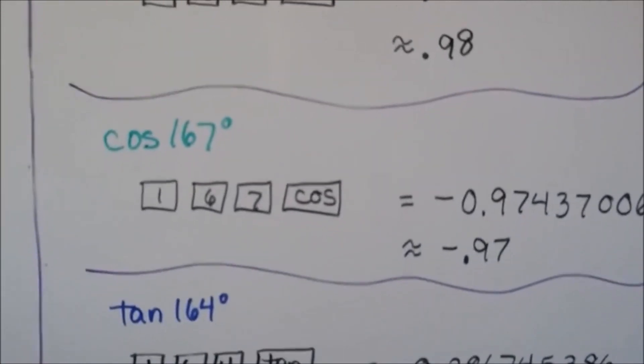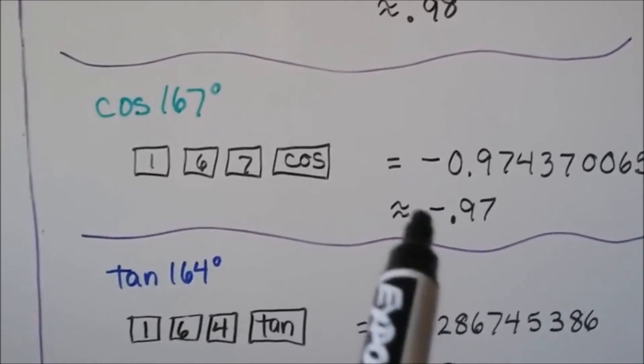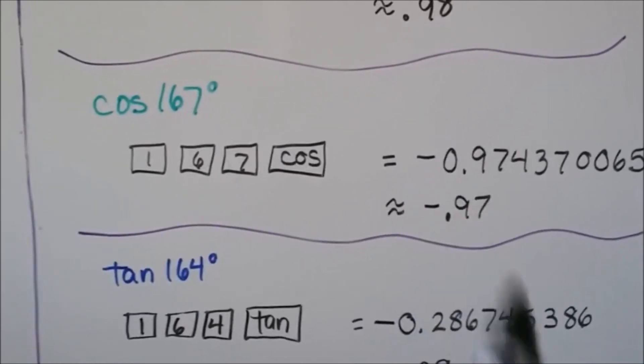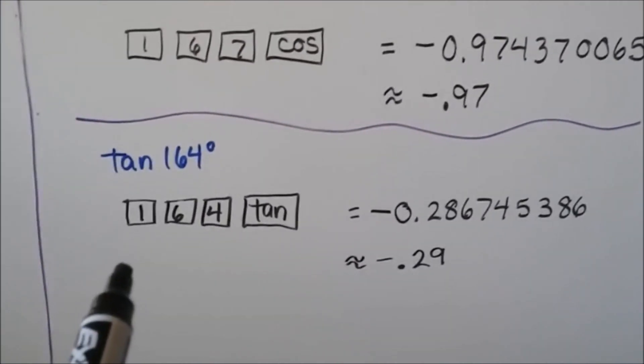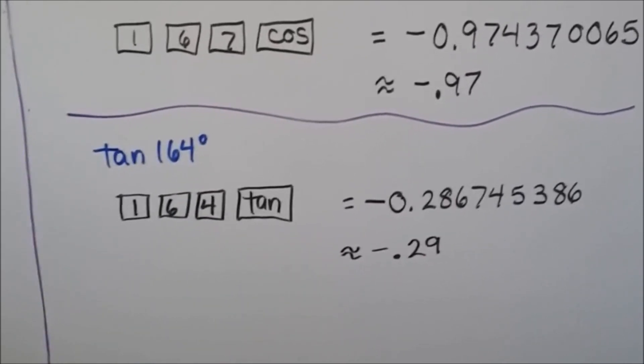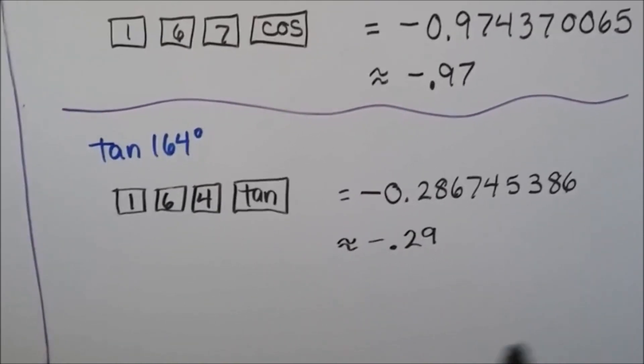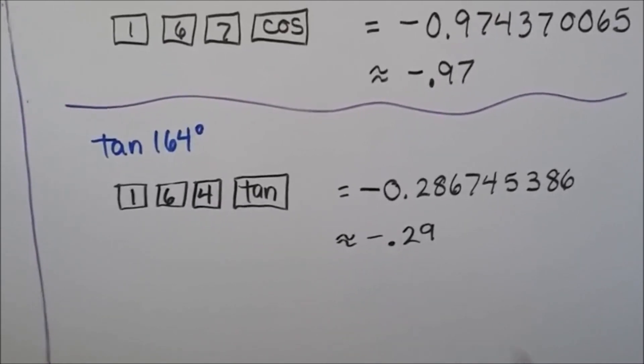For the cosine of 167 degrees, we put 1, 6, 7, hit the cosine button. It's approximately negative 0.97. For the tangent of 164 degrees, 1, 6, 4, hit the tangent button, and we get this nice long decimal that can be rounded to approximately negative 0.29.